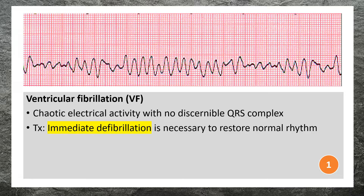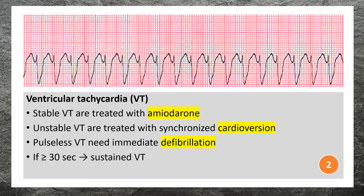Ventricular tachycardia (VT) can be classified as sustained or non-sustained, with a generally accepted cutoff of 30 seconds. The rhythm may arise from the ventricular myocardium, the distal conduction system, or both. Causes of VT include ischemic heart disease, cardiomyopathy, heart failure, myocarditis, heart valve disease, and idiopathic VT.